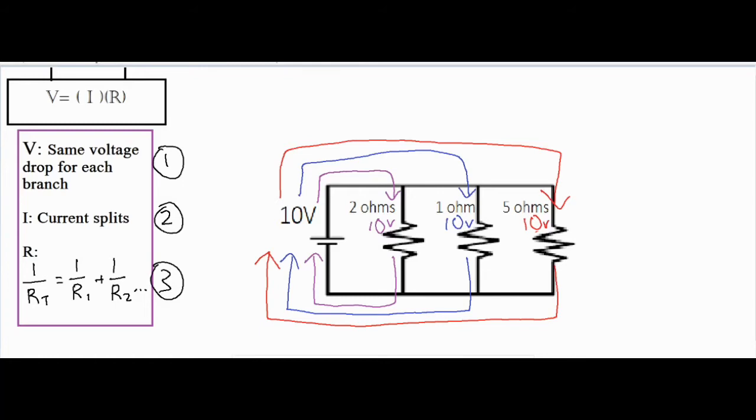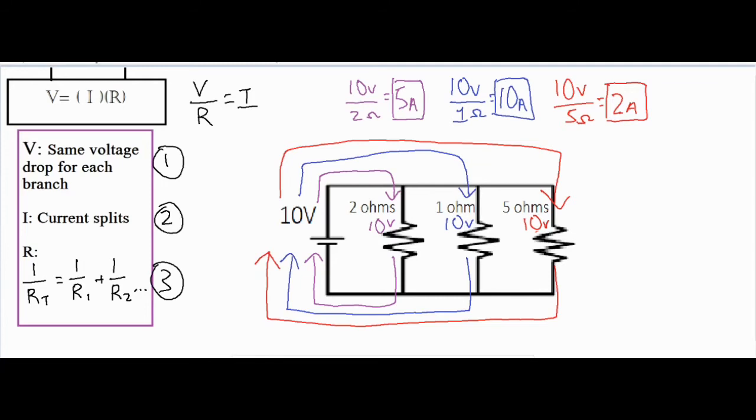Now if I want to find the current for each of those branches, I can go ahead and take Ohm's law and I'm going to rearrange it a little bit. If I take voltage divided by resistance, that gives me the current. So let's go ahead and find the current through each one of these branches. I did voltage divided by resistance for each one of the three. We know we had a total voltage drop of 10 across each of the branches. We have our individual resistances written on our diagram, so we just divided the two and got our resistance.